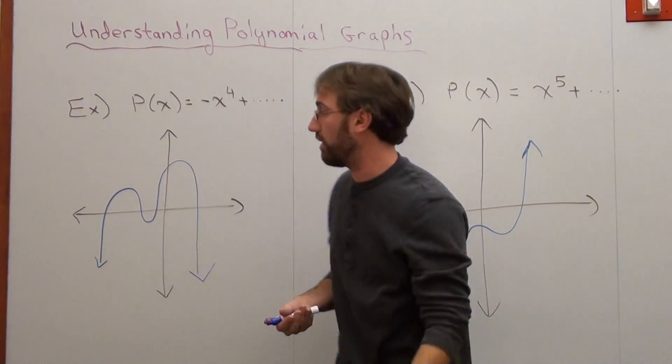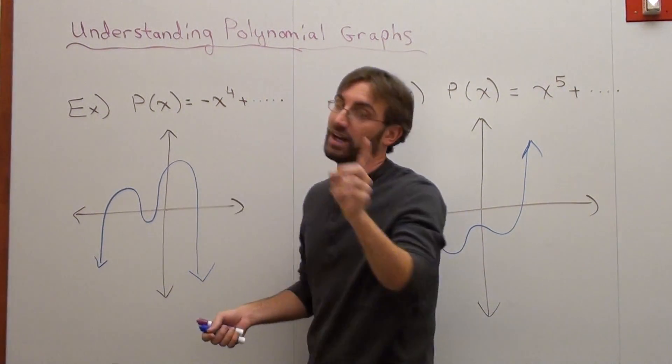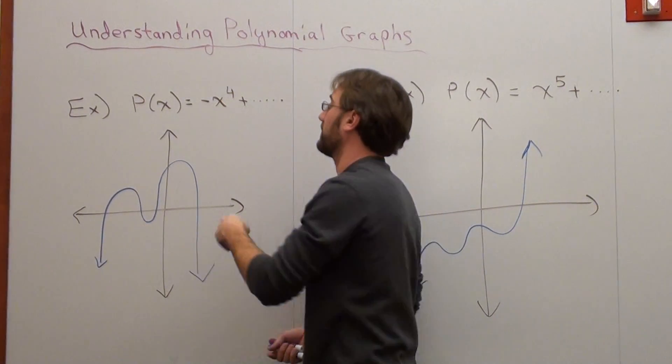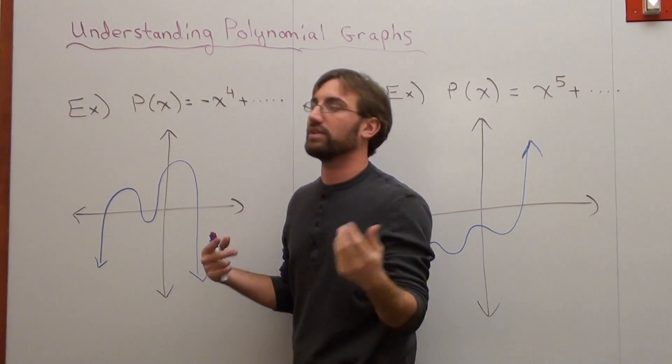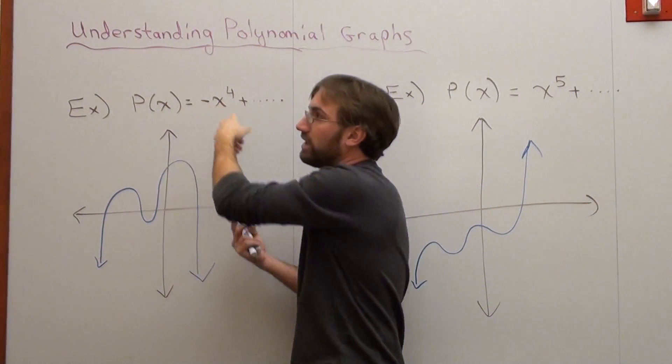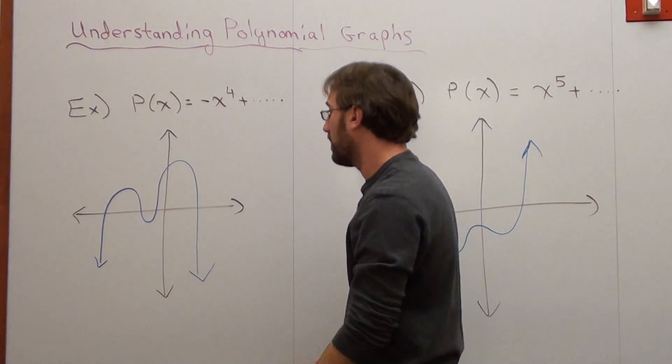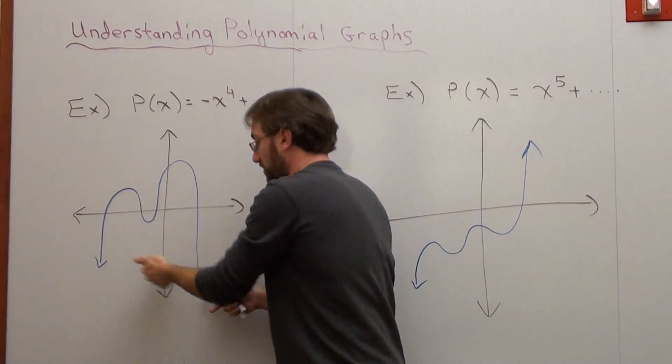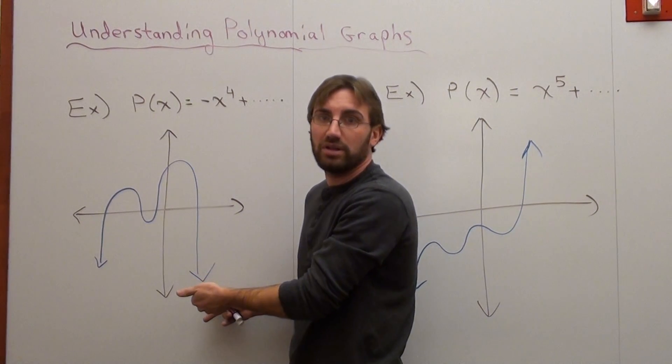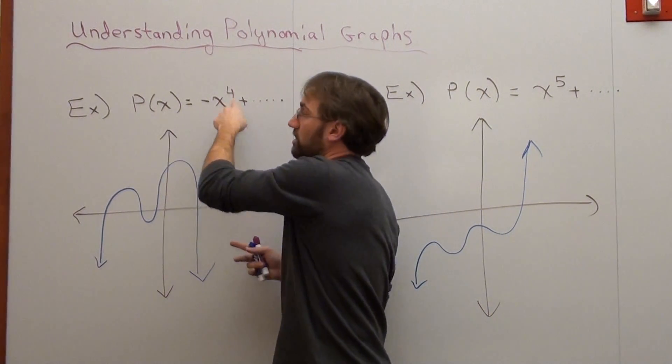But what I do know is that this is an odd, sorry, not an odd. It's a negative function. It's negative because the leading coefficient is negative or because the right arrow is pointing down. Now, it's even because it's x to the fourth.